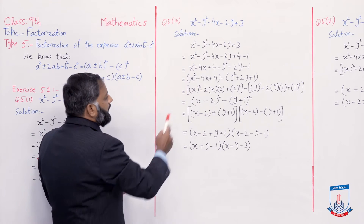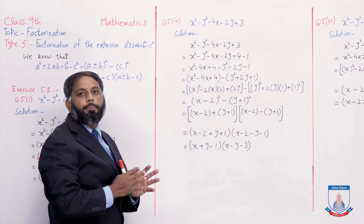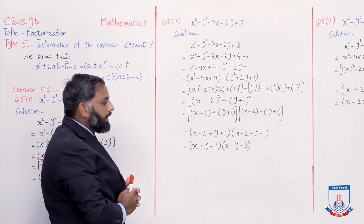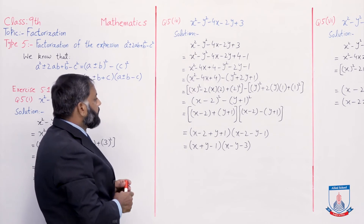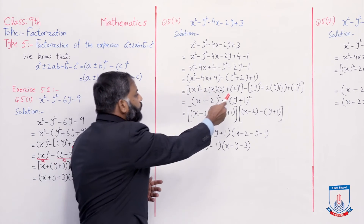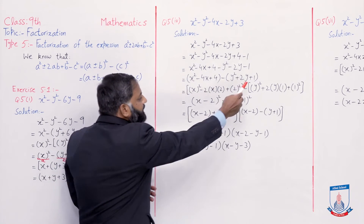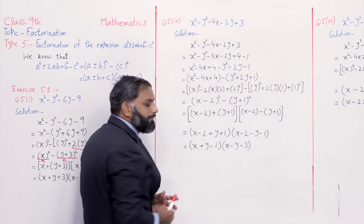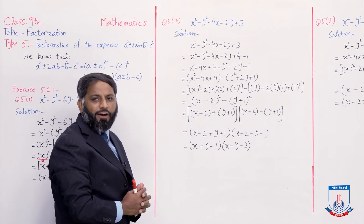Ab jo first three terms hain: x² ko hum x ka whole square likh sakte hain aur last term 4 hai, 4 ko hum 2 ka whole square likh sakte hain. To a ki value hamare paas x aa gayi aur b ki value 2 aa gayi. Ab minus 2ab mein a ki jagah x, b ki jagah 2 — to formula complete ho jaayega: x² - 2×x×2 = 4x, aur 2 ka square = 4. Isi tarah agli three terms pe chalein: y² ko y ka whole square likha aur last term 1 hai, 1 ko 1 ka square likha. 2 formula ka a = y aur b = 1: 2×y×1 = 2y aayega. To is tarah yeh bhi ek perfect square ban gaya.